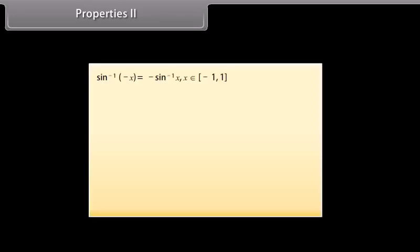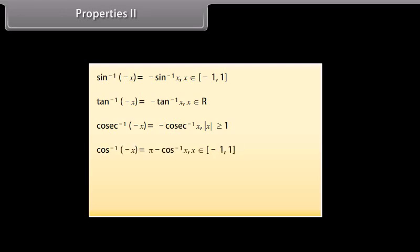Property 2: sin⁻¹(−x) = −sin⁻¹ x, x ∈ [−1, 1]. tan⁻¹(−x) = −tan⁻¹ x, x ∈ ℝ. cosec⁻¹(−x) = −cosec⁻¹ x, |x| ≥ 1. cos⁻¹(−x) = π − cos⁻¹ x, x ∈ [−1, 1]. sec⁻¹(−x) = π − sec⁻¹ x, |x| ≥ 1. cot⁻¹(−x) = π − cot⁻¹ x, x ∈ ℝ.